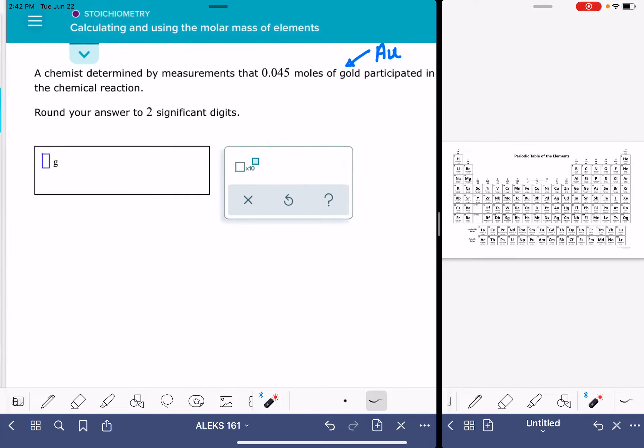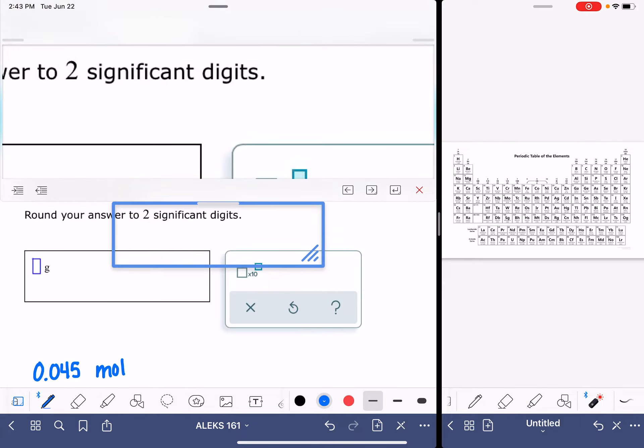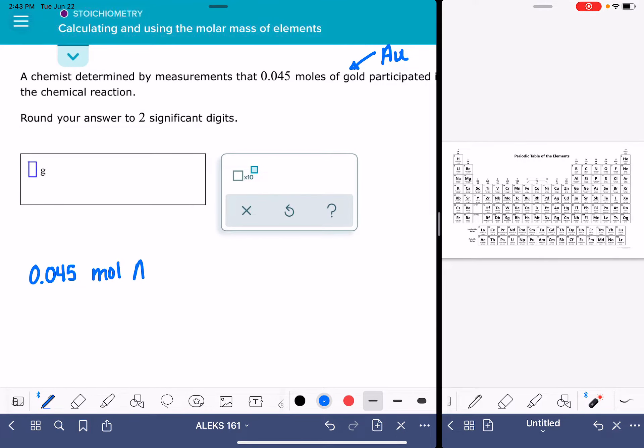So to solve a problem like this, the first thing we want to do is start by writing the number that's been given to us in the question, which is 0.045. We want to write the unit of that number. For this one, it's going to be moles. And it's possible that maybe in this question, you'll be given the unit of grams right here, so in that case, you'd be writing grams. And then the last thing you want to do is write the symbol for the element that you're working with in this particular question. Our symbol is Au.